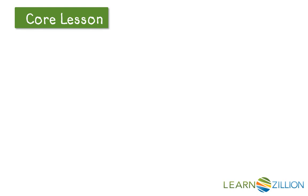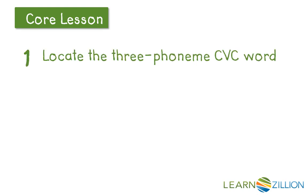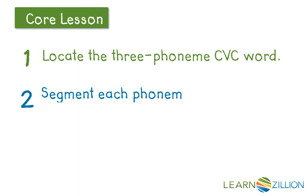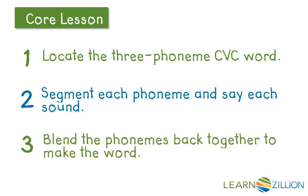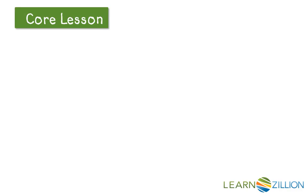Here are the steps to decode a CVC word. First, find the three-phoneme CVC word. Then, segment each phoneme and say each sound. Last, blend the phonemes back together — that makes the word. Let's try it with another three-phoneme CVC word.